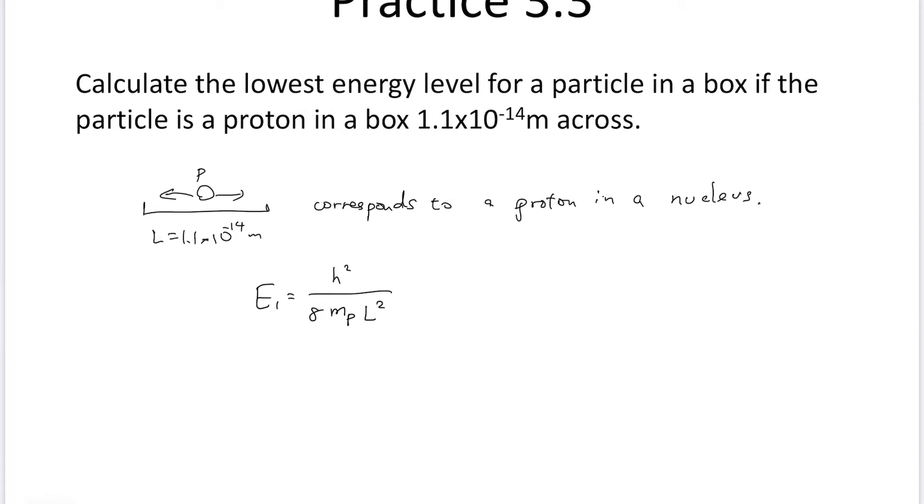Then you calculate by substituting the constants, mass of the proton, and L is the size of the nucleus. Then this becomes 1.7 times 10 to 6 electron volts.